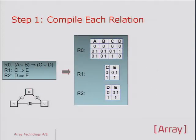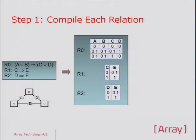A very simple example — simple Boolean propositional logic — just to illustrate three simple relations: A or B implies C or D; C implies E; and D implies E. Each of these relations is compiled into an array representation representing the valid combinations. Looking at the first relation R0, we have four variables and the three rows in the table represent the entire solution space. The first row — zero, zero, zero, zero — is a single combination. The others are Cartesian subspaces: the second row represents eight combinations, and the third represents four combinations.